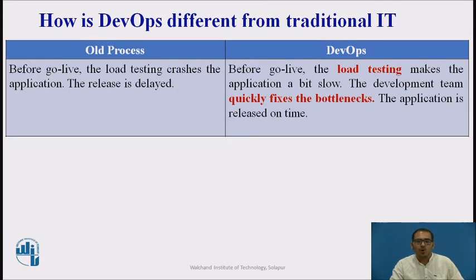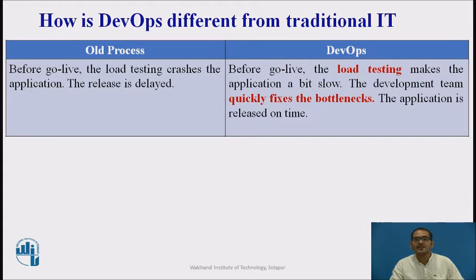In the old process, before going live, load testing crashes the application and the release is delayed. But in DevOps, before go-live, load testing makes the application a bit slow, the development team quickly fixes the problem, and the application is released on time. These are the key differences between the old waterfall model and DevOps.